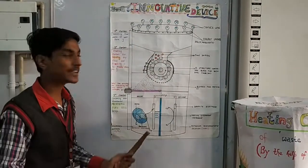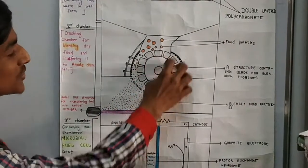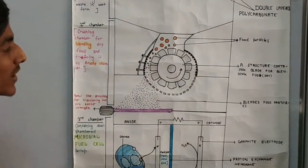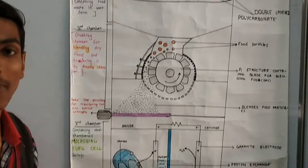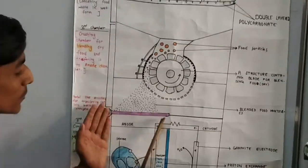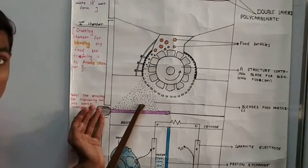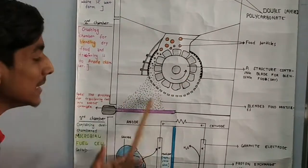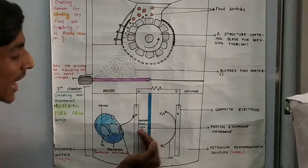When heating is complete, the waste moves to the crushing chamber. There we have a blade in a turbine structure which will blend the food particles. These food particles pass through a paddle-like structure attached to a rod. When crushing is complete, the paddle transfers the whole food waste into the anode chamber.